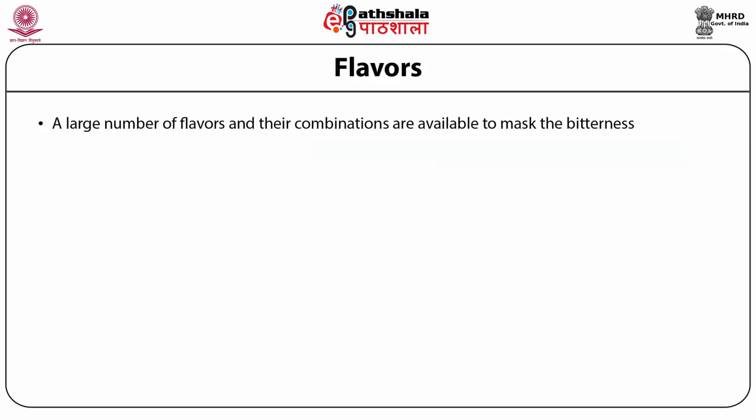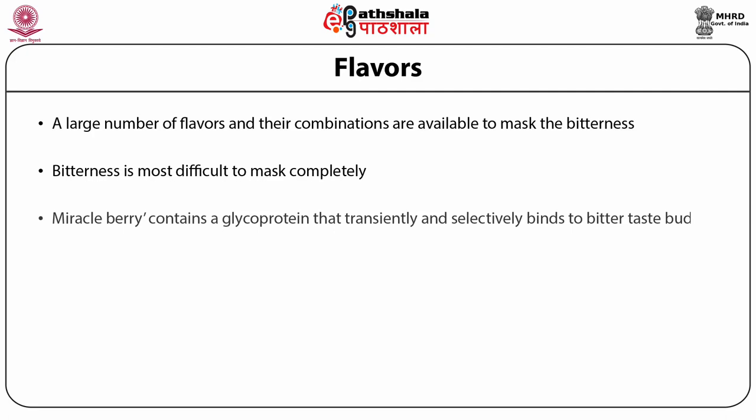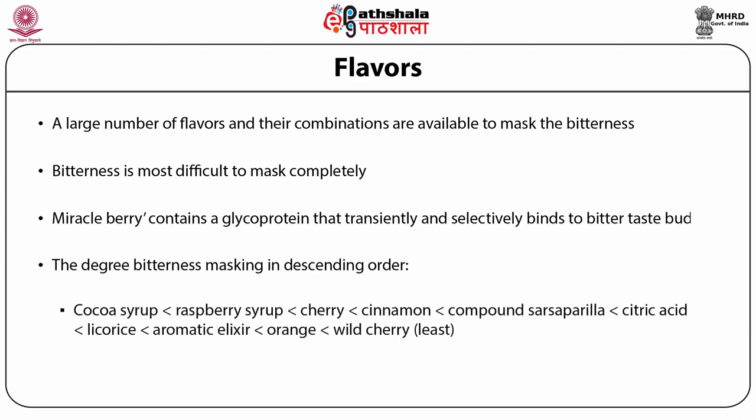A large number of flavors and their combinations are available to mask bitterness, which is the most difficult taste sensation to mask completely. Miracle berry contains a glycoprotein that transiently and selectively binds to bitter taste buds and hence can help in masking bitterness. The degree of bitterness masking in descending order of effectiveness is: cocoa syrup, raspberry syrup, cherry, cinnamon, compound sarsaparilla, citric acid, liquorice, aromatic elixir, orange syrup, and wild cherry (least effective).